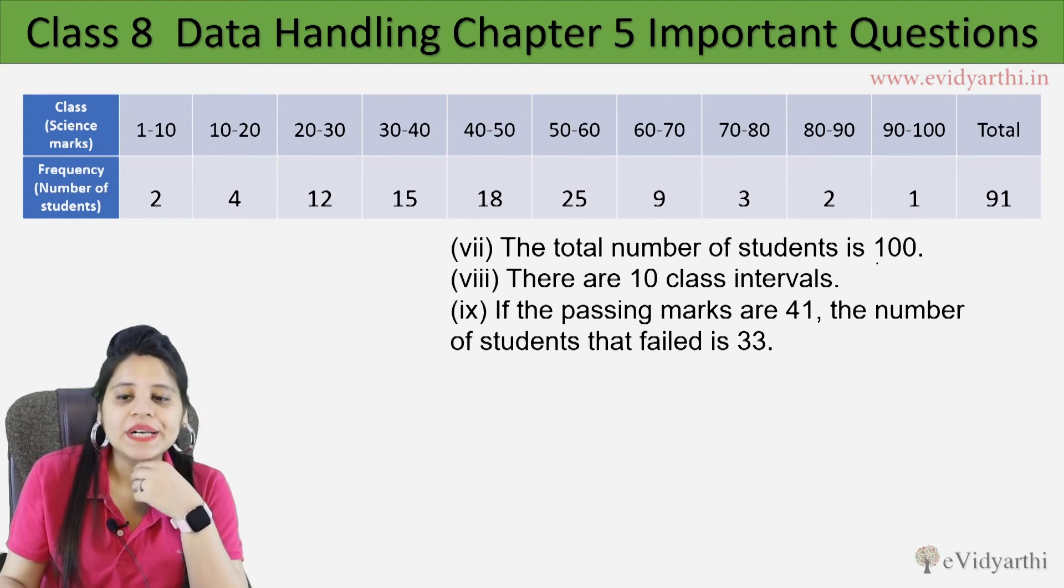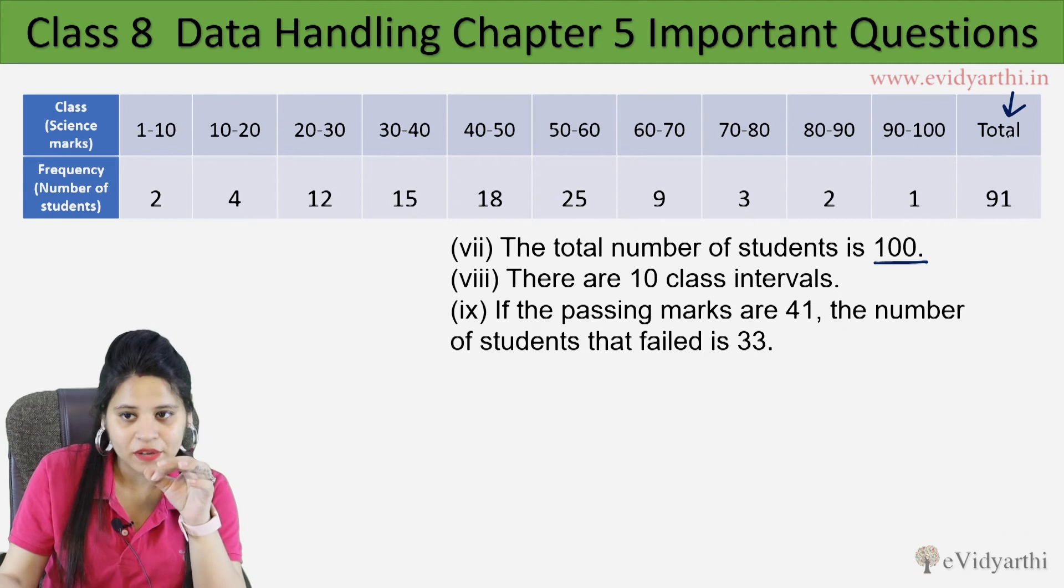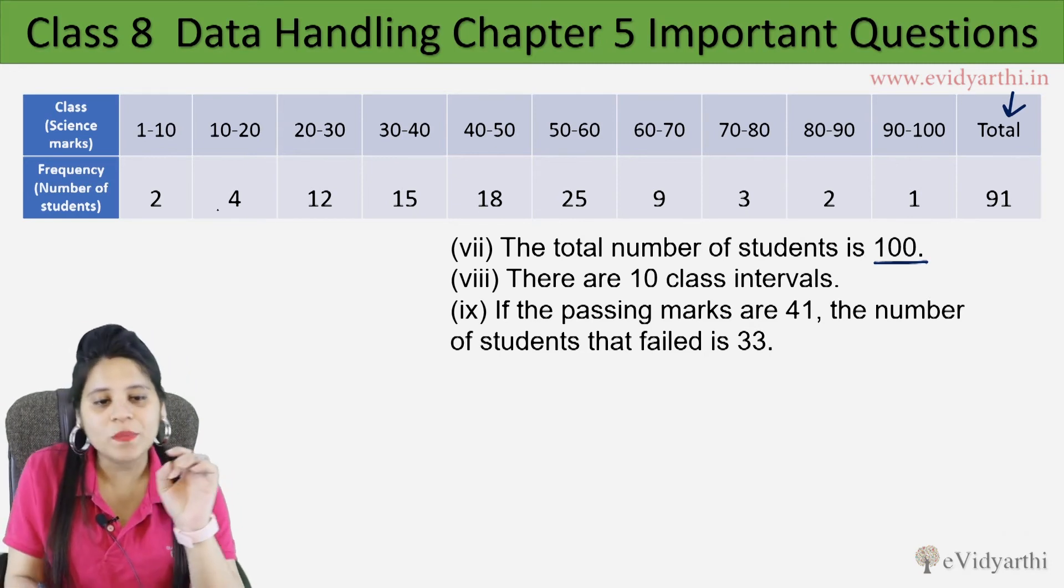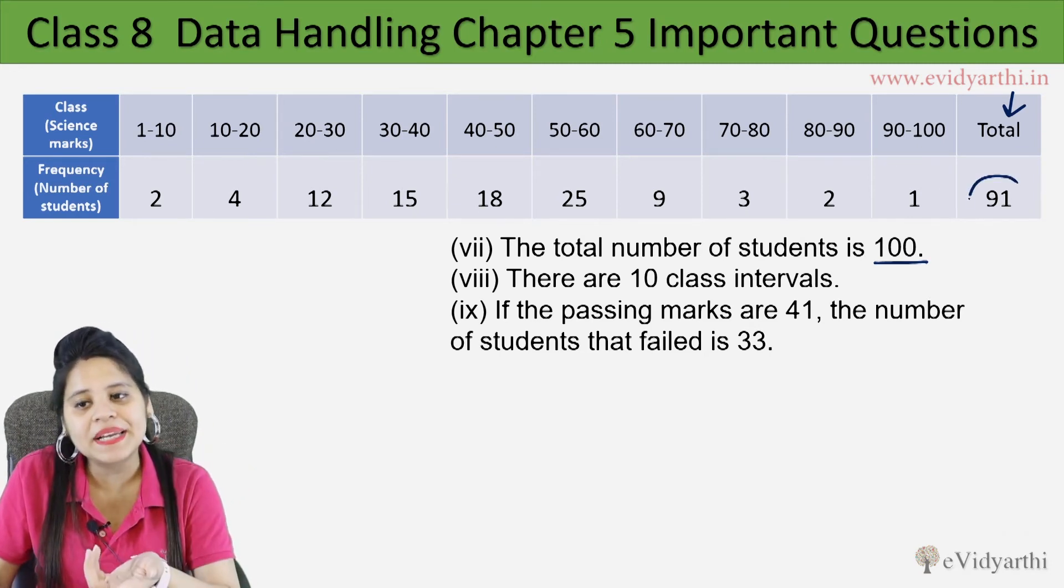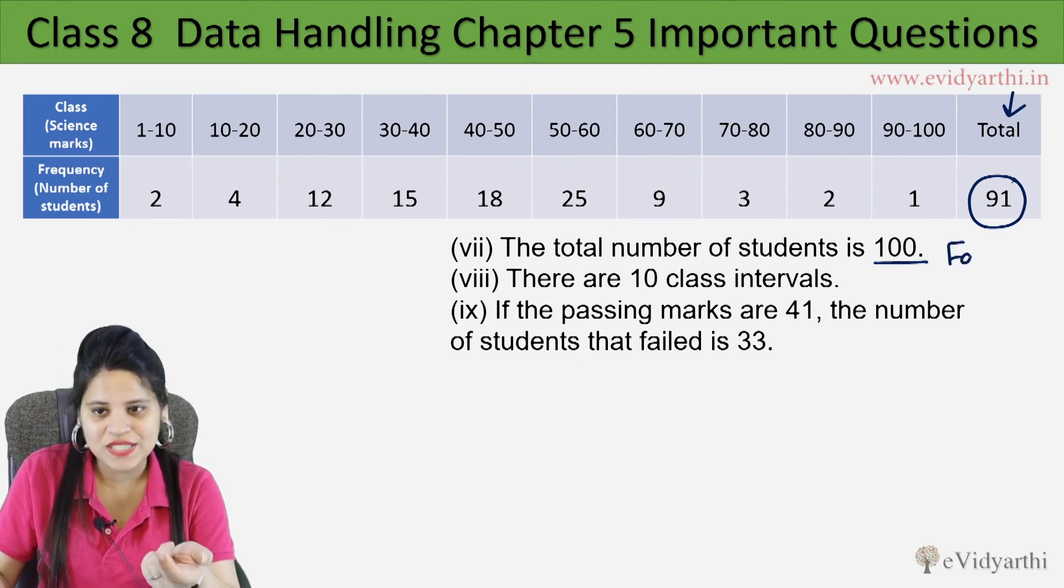Moving to the next one, 7th. The total number of students is 100. First of all, if the table is not given here, then we will total them all. But here clearly given is 91. So total 100 is not. So this is false.